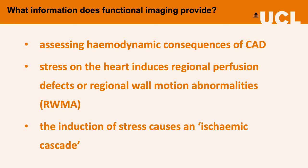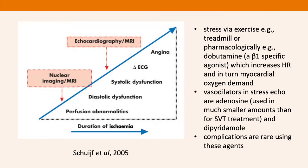What information does functional imaging such as dobutamine stress echo provide? It is used to assess the hemodynamic consequences of coronary artery disease. Stress on the heart will induce a regional perfusion defect or regional wall motion abnormalities, known as RWMAs. The induction of stress on the myocardium causes an ischemic cascade.